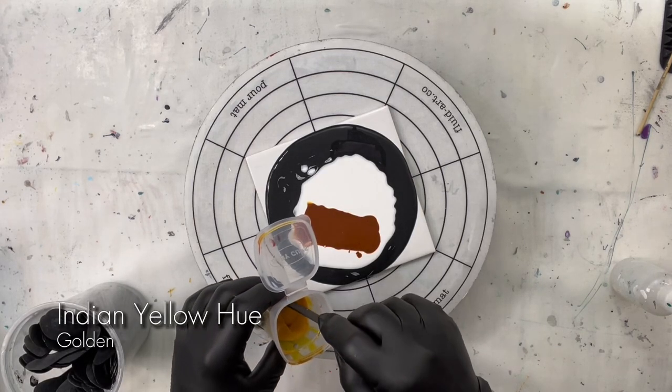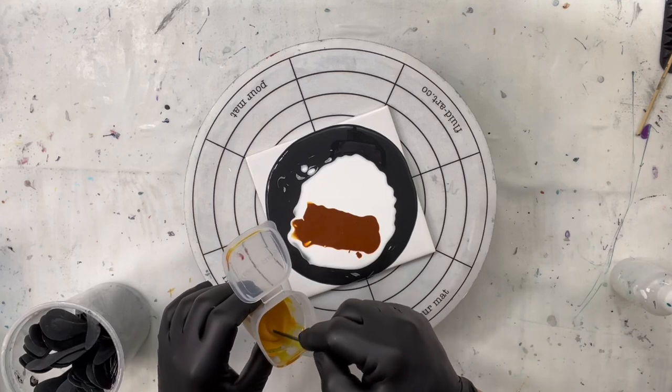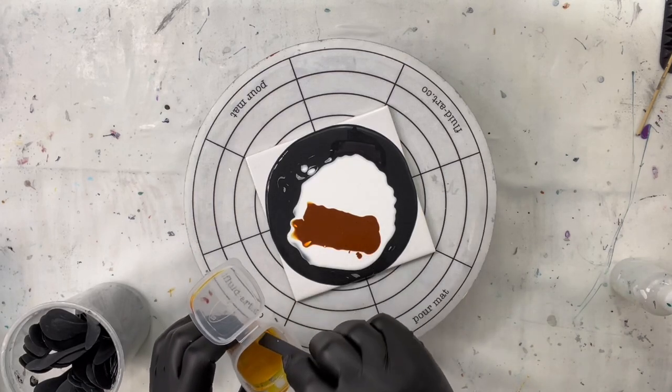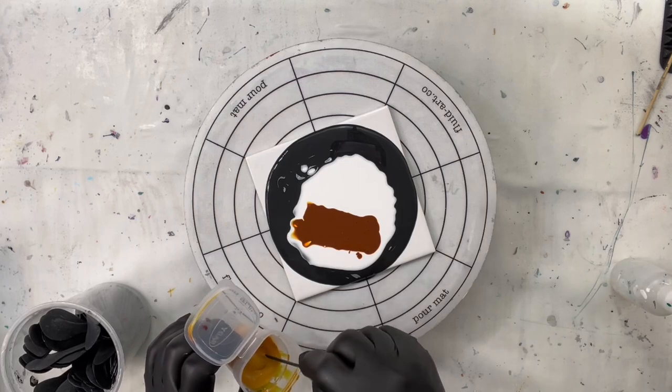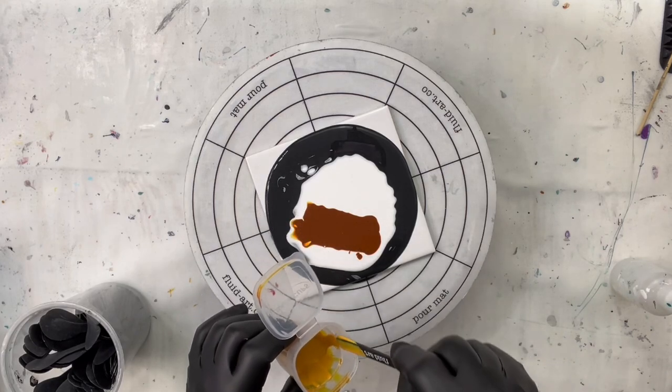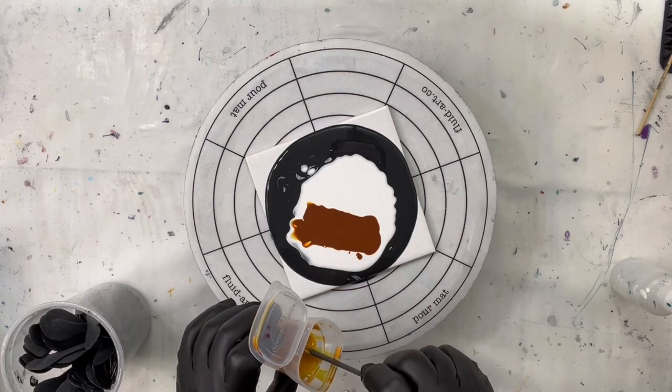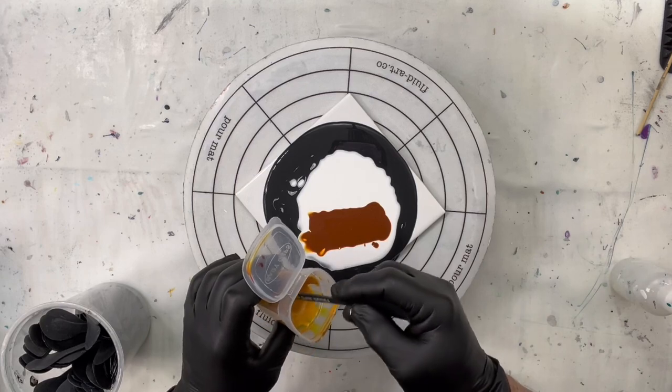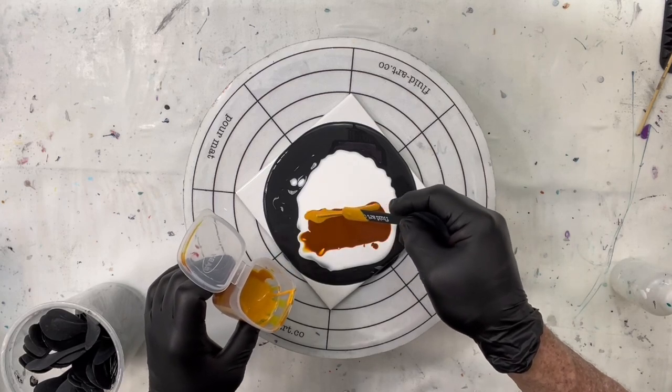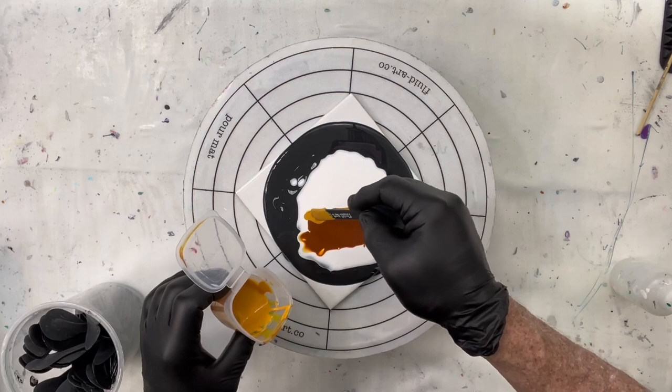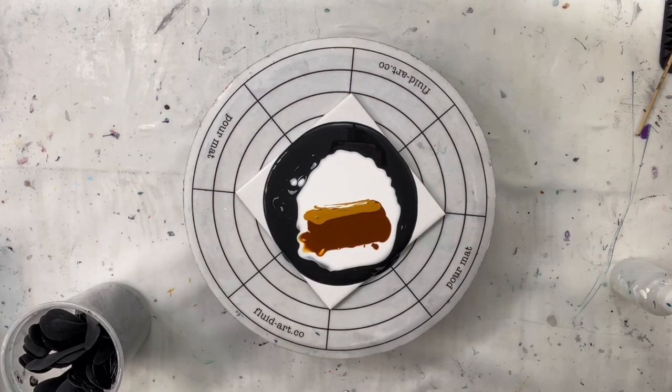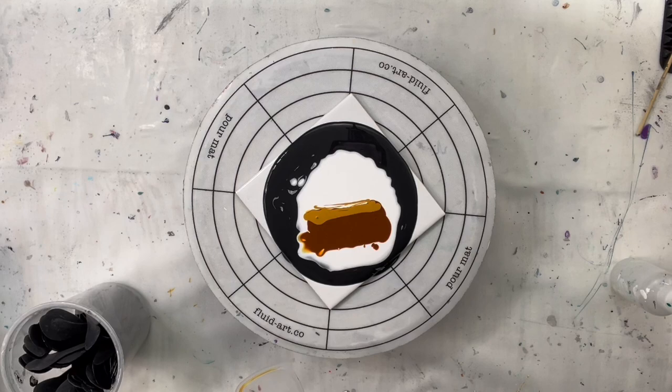This is pretty good. This is Indian Yellow. Indian Yellow Hue, it's a golden product. This was one of the high flows, so it started out as a liquid. That's actually a little bit thin for what I'm doing here, but I'm going to roll with it. I'm just creating what I want to pull up.